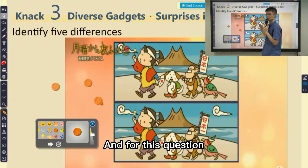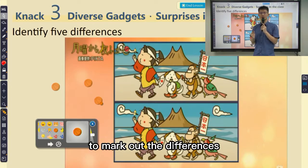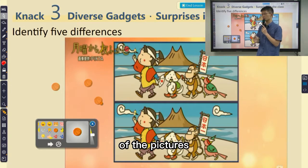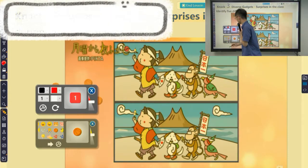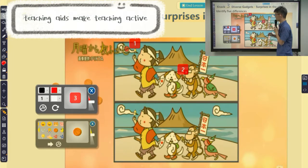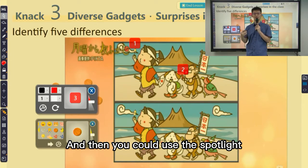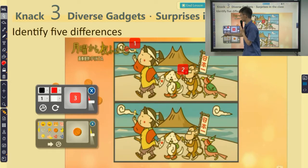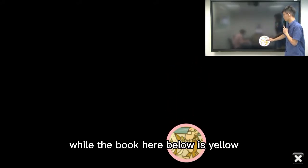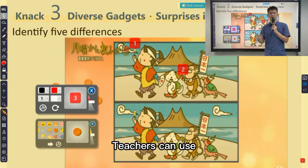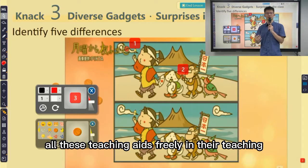For this question, you can use the number stamp to mark out the differences in the pictures. Then you can use the spotlight to see what the differences are. The book here is red, while the book below is yellow. Teachers can use all these teaching aids freely in their teaching.